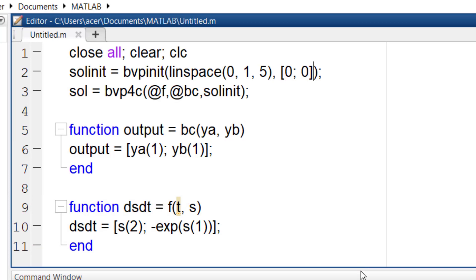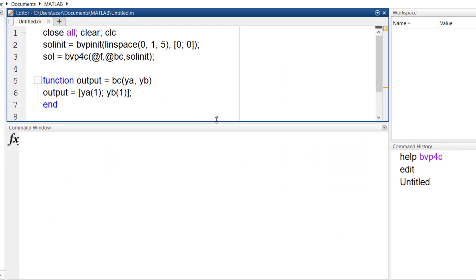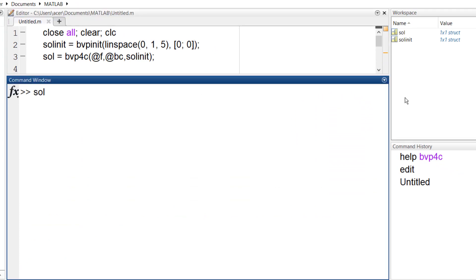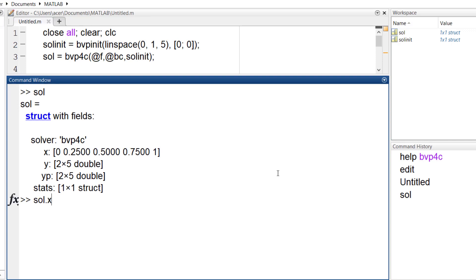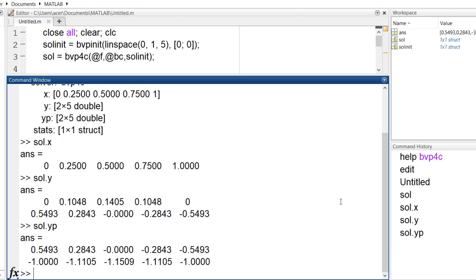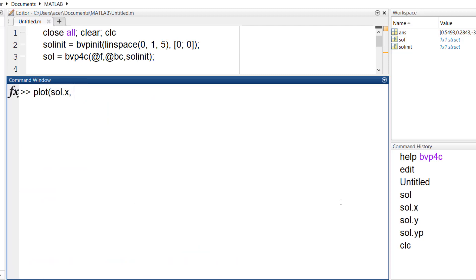Now I can run the code. I take a look at sol. It has x and y and yp which stands for y prime. This is sol.x. I had defined it here. This is the solution for y and y prime. And sol.yp is again y prime and y double prime. So I plot y versus x.